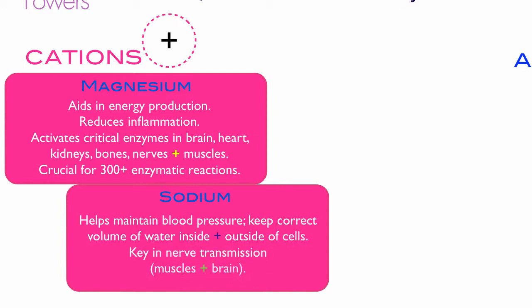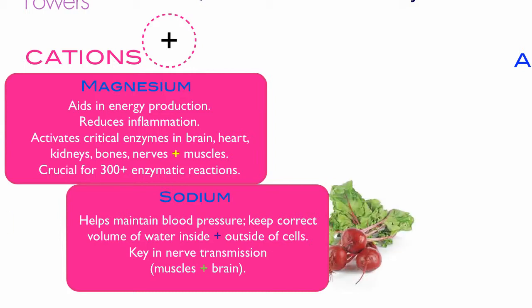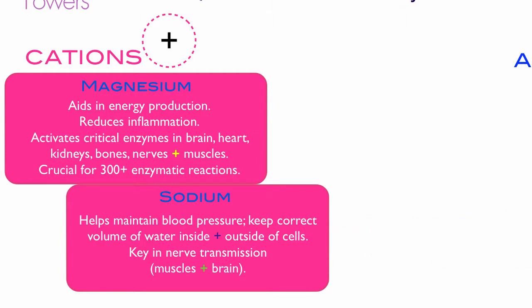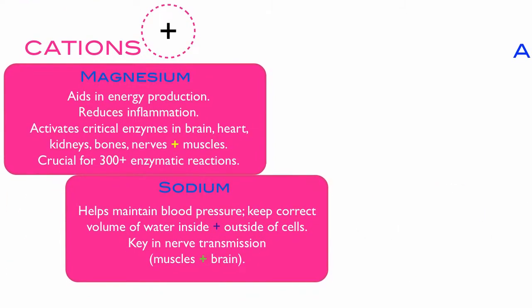Sodium helps maintain blood pressure, keeping the correct volume of water inside and outside of the cells. It's key in nerve transmission, particularly in the muscles and brain. Sodium is found naturally in radishes, celery, and lobster.